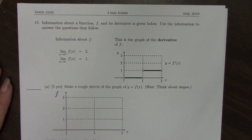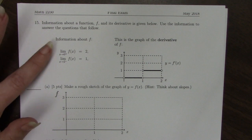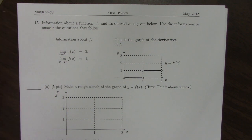Question 15 says information about a function f and its derivative is given below. Use the information to answer questions that follow. The information about f includes two limits: the limit as x goes to 0 from the right and the limit as x goes to 2 from the left. We're also given the graph of the derivative.